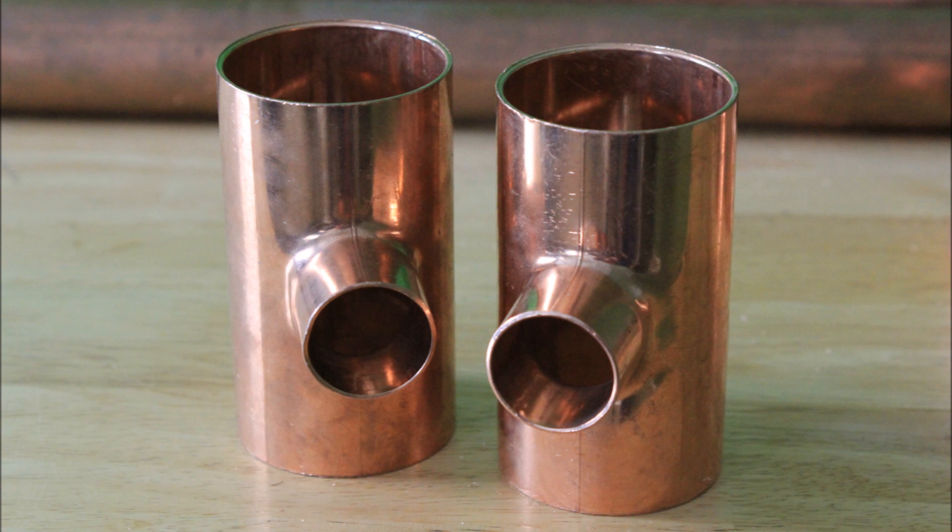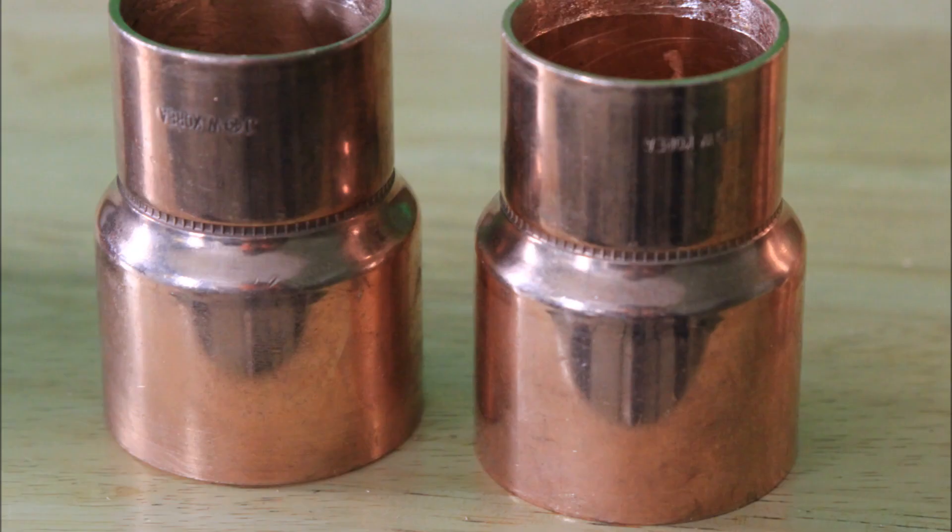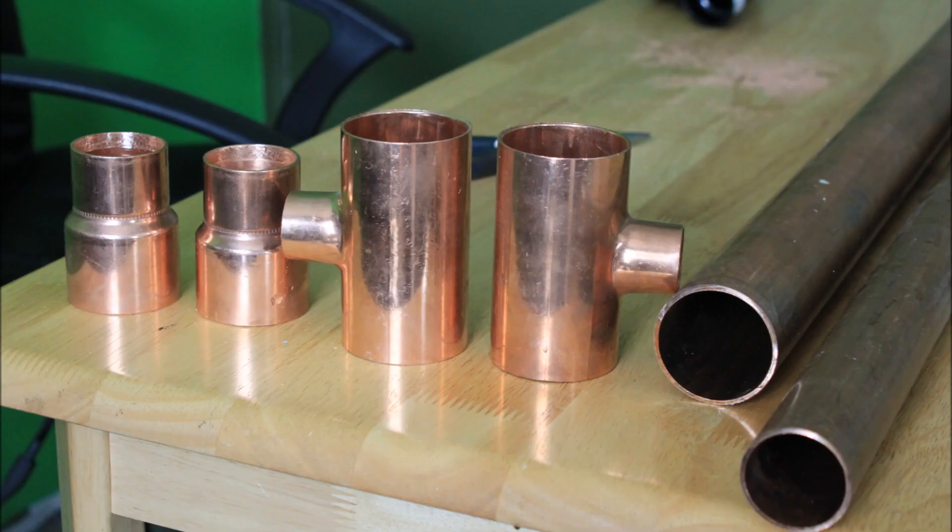To make this style of heat exchanger, you're going to need a few things. First, you're going to need two by three-quarter inch preferred reducing tees. You will need two by inch and a half reducing bushings. You are also going to need two pieces of pipe, inch and a half and two inch, approximately four to five feet of each.